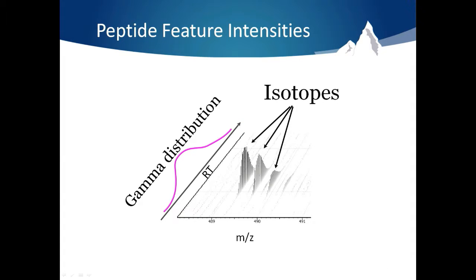It does this using a concept already used in label-free quantification algorithms called peptide feature detection. A peptide found in the LC-MS experiment will appear in a predictable way.